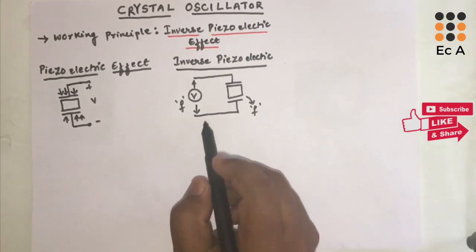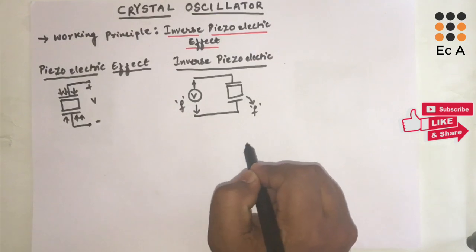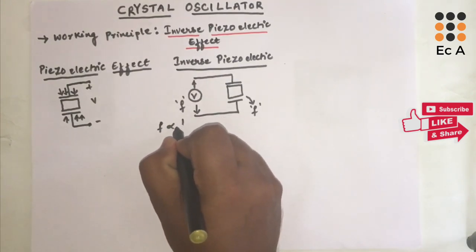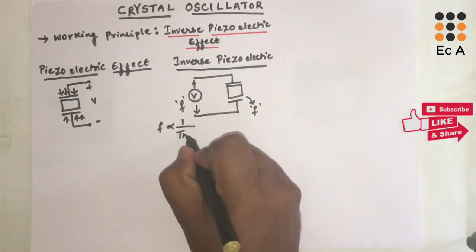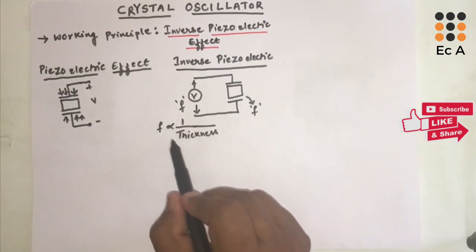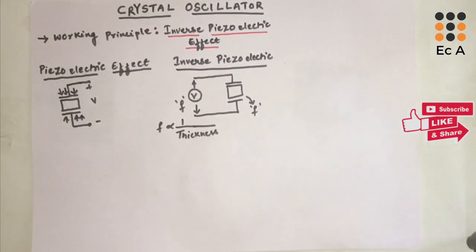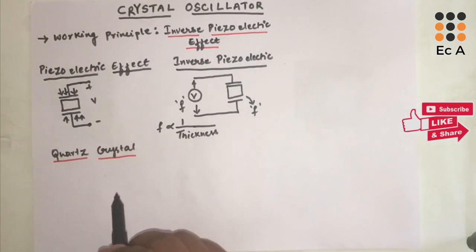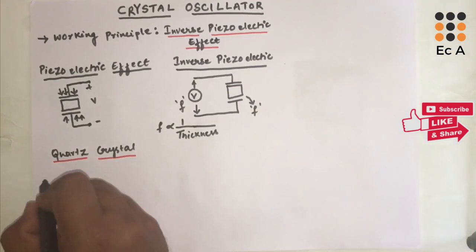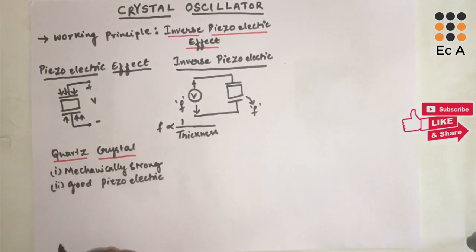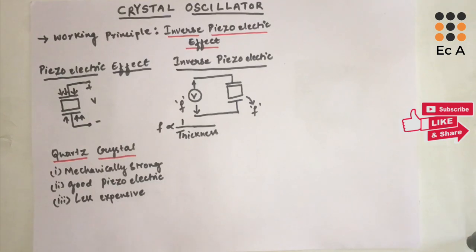The natural resonating frequency of the crystal depends upon the thickness of the crystal, which means the frequency of oscillation is inversely proportional to the thickness of the crystal — frequency of oscillation will increase as the thickness decreases. Usually in crystal oscillators, quartz crystal is used. Quartz crystal is used in sinusoidal oscillators because it is mechanically strong, has good piezoelectric sensitivity, and is also less expensive.